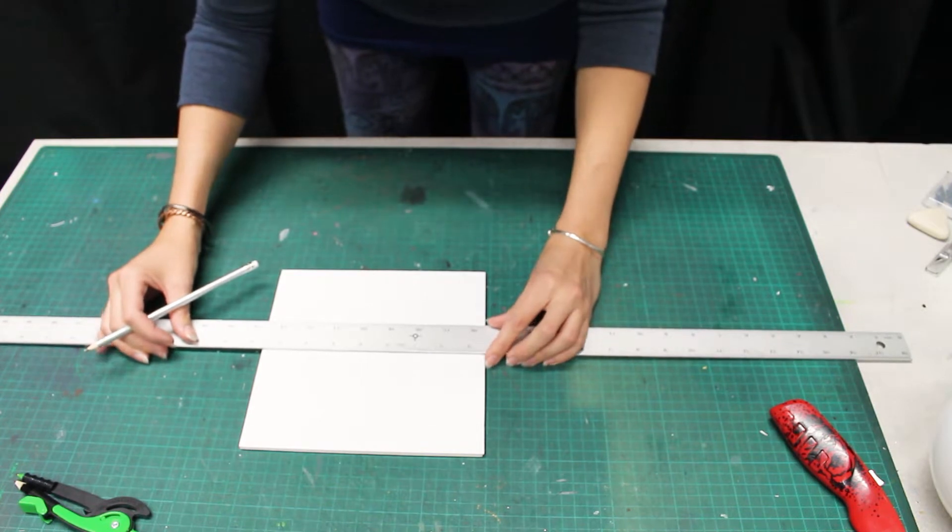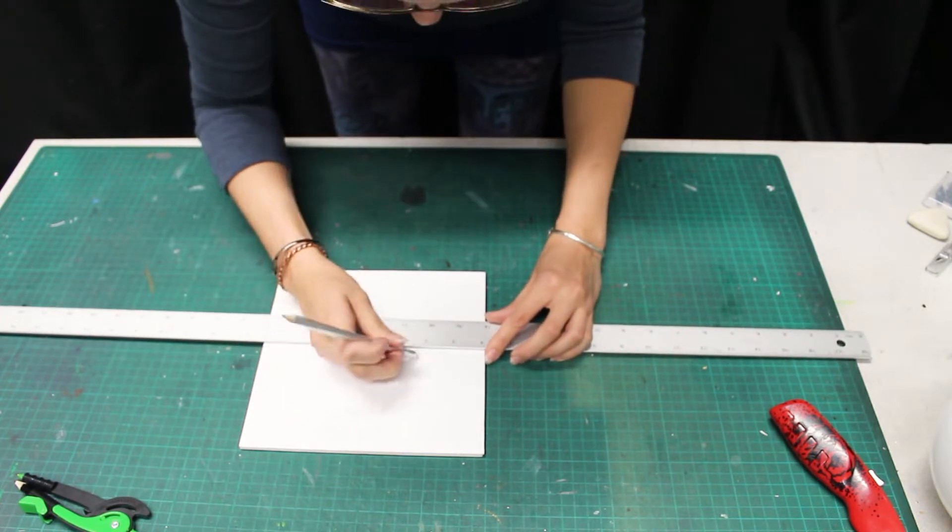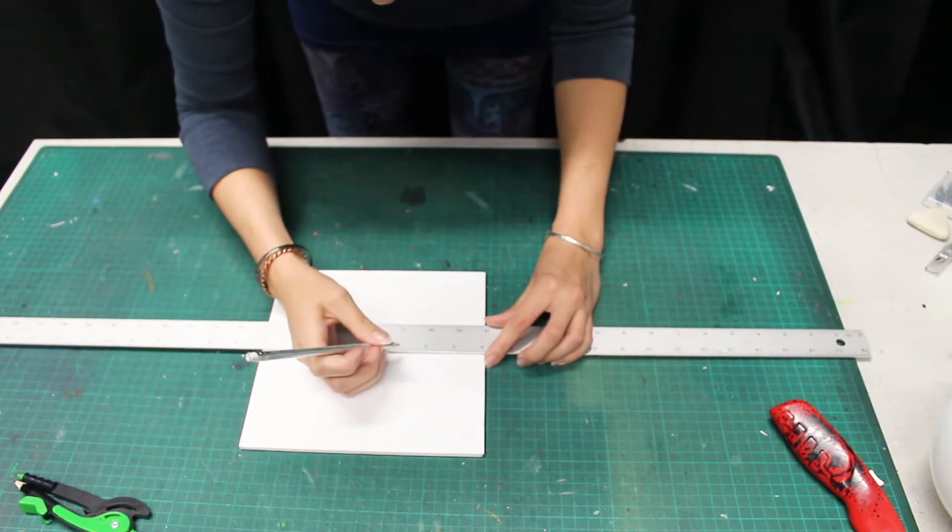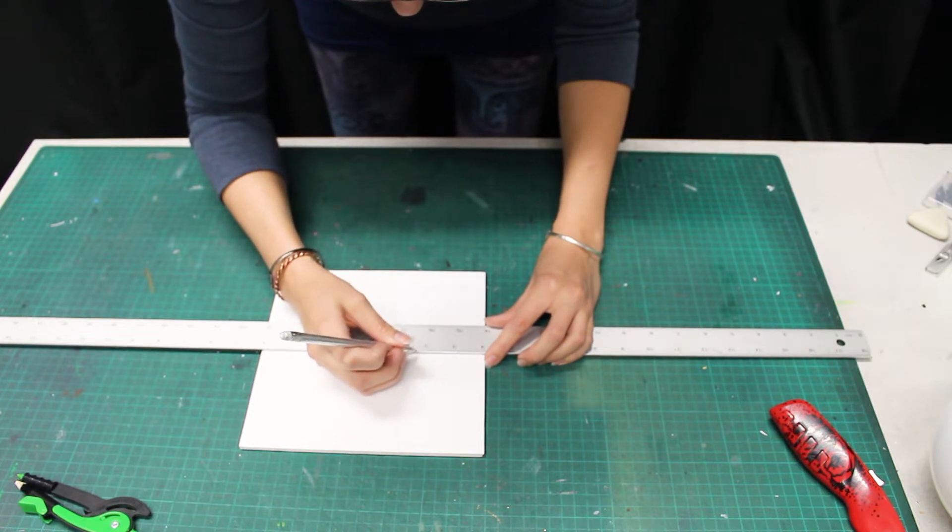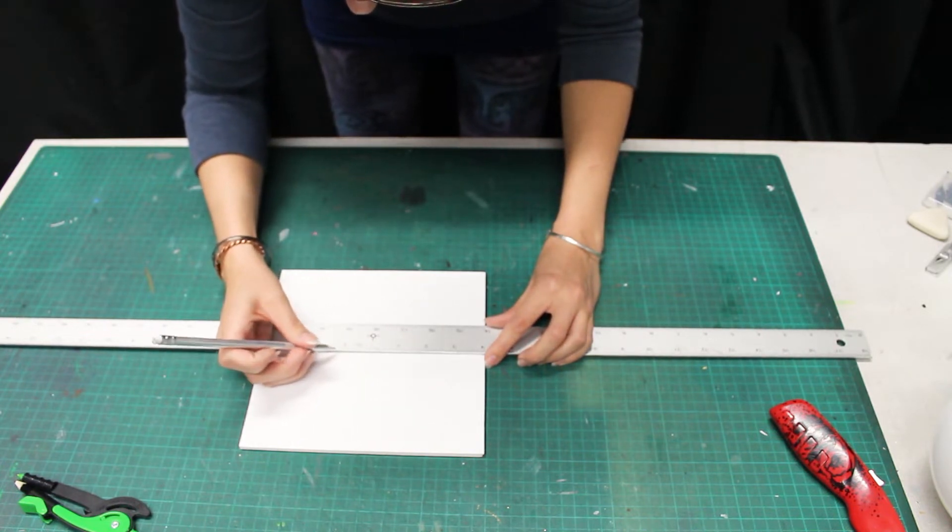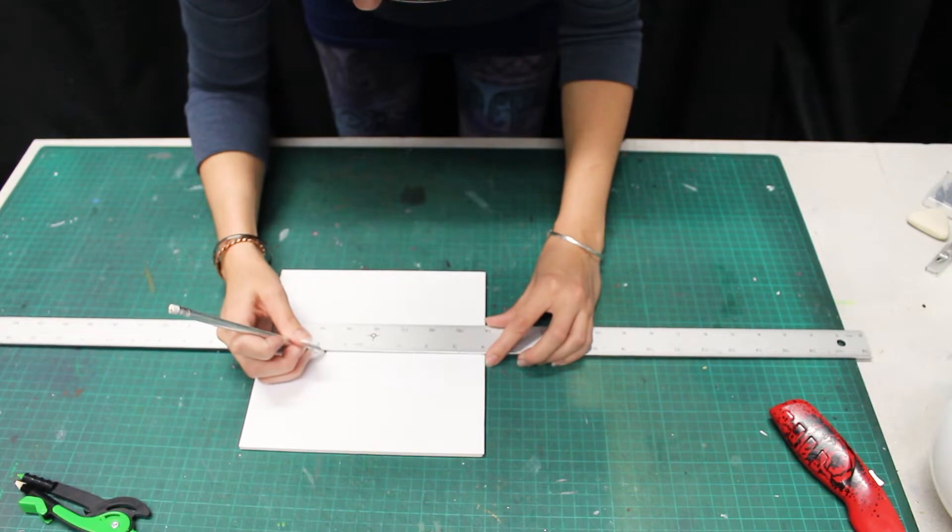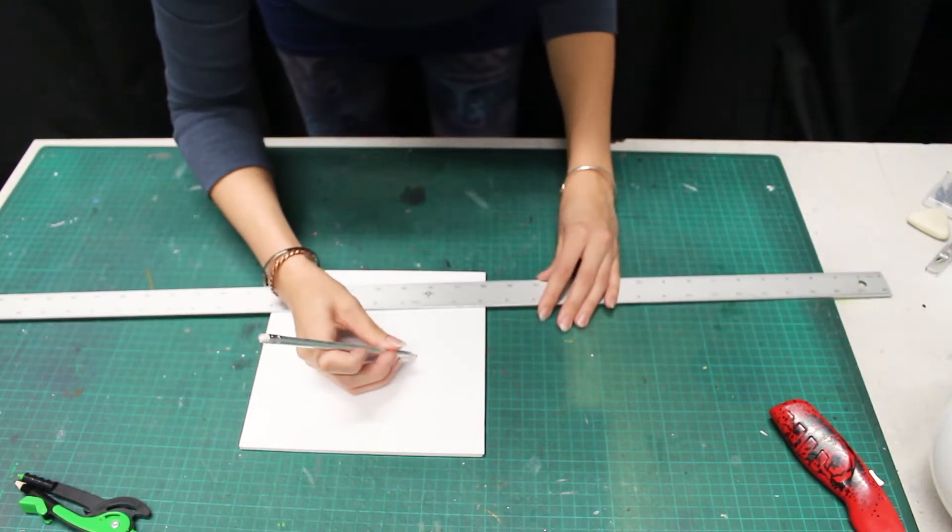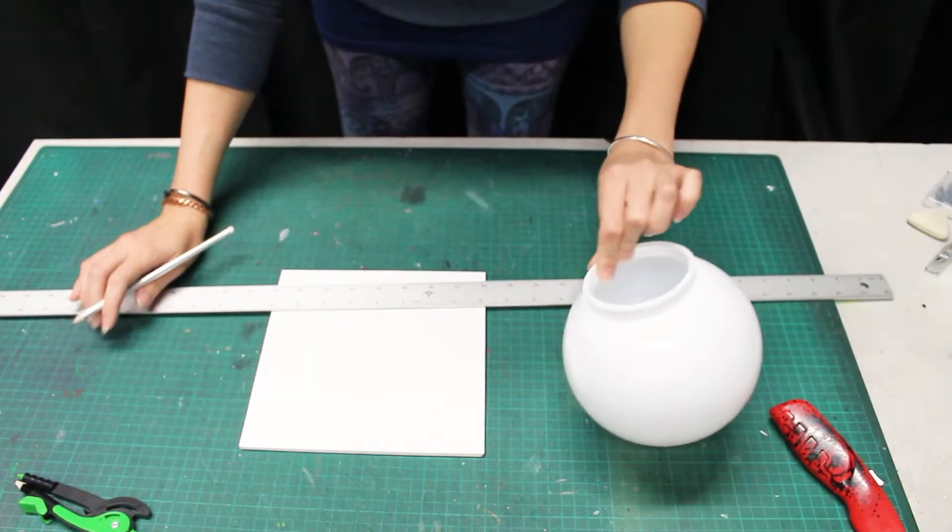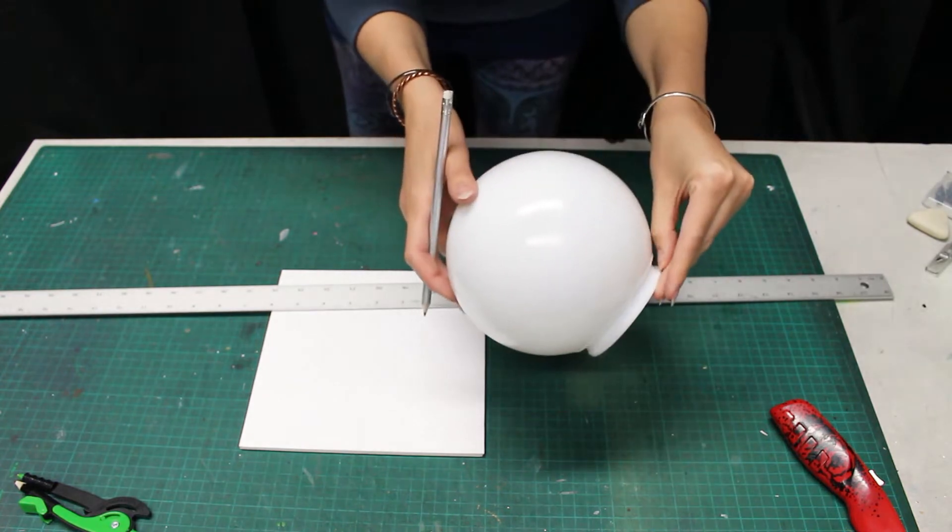Double check your measurements. You can see I didn't have it quite right here. You may need to adjust your measurements to accommodate for any lip on the light cover.